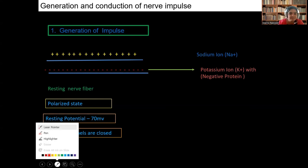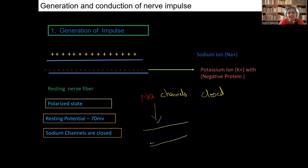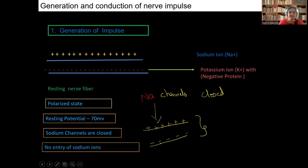We have to remember: during the rest phase, sodium channels are closed. When the sodium channels are closed, these sodium ions are not passing through the axolemma. Inside the axolemma there will be potassium ions along with the negative protein, causing the inside negative charge and outside positive charge. These sodium ions are not coming inside, so the polarized state is seen in the case of the resting fiber. There is no entry of sodium ions.